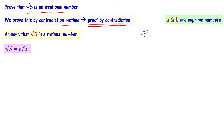For example, 2 by 6 is a rational number. We can simplify 2 by 6 to 1 by 3. Now 2 and 6 are integers, and 1 and 3 are integers. But 1 and 3 are co-prime numbers — they have only number 1 as the common factor.